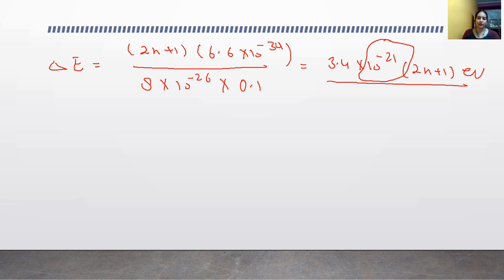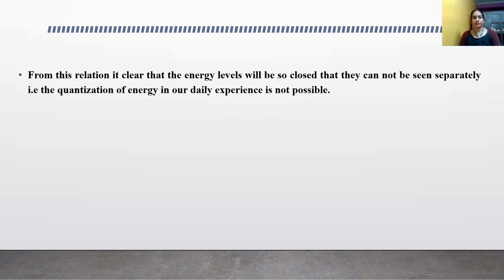For 2n plus 1 equals 1, 2, or 3, the energy is so small that we cannot experience this in daily life and we cannot see it separately. So we can say these expressions. It is clear that energy levels will be so close that they cannot be seen separately. Quantization of energy in daily life or daily experiences is not possible, and we see continuous energy.